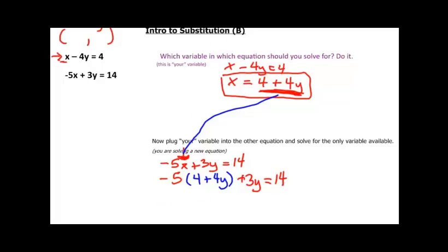Remember, this expression is what we're going to substitute. The rest of our equation was plus 3y equal to 14. Now this time, since we have an expression that we are going to multiply by that negative 5, we have to distribute. So negative 5 times 4 would be negative 20, and negative 5 times 4y would be minus 20y, and plus our 3y is equal to 14.